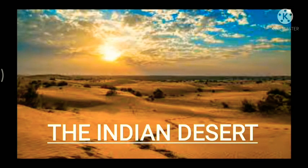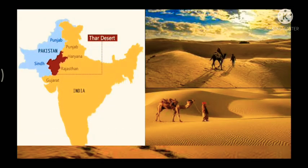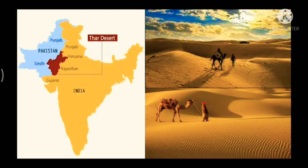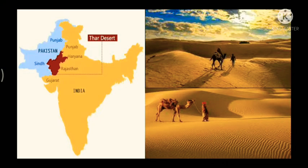The Indian Desert lies towards the western margins of the Aravali Hills. It's an undulating sandy plain covered with sand dunes — undulating meaning it moves up and down just like waves, forming curves. This region receives very low rainfall, below 150 millimeters per year, and has an arid climate with very low vegetation cover.